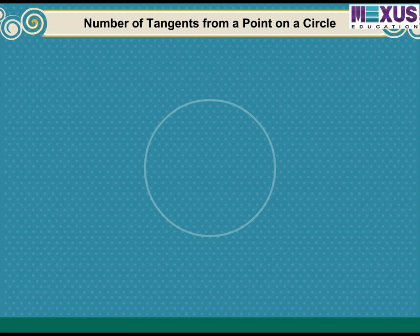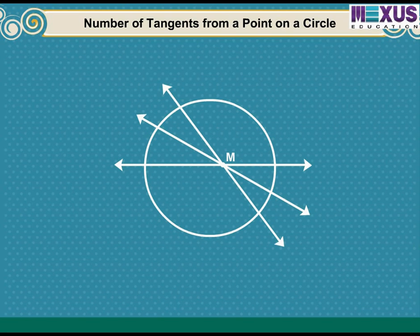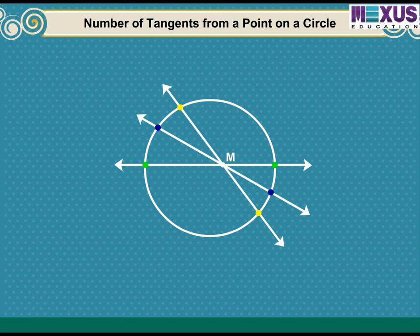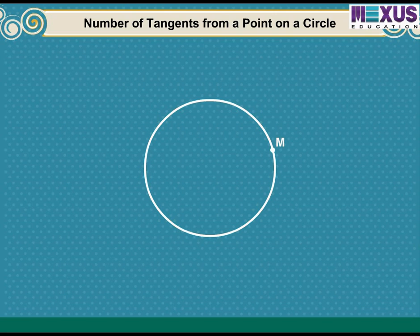Let us understand the number of tangents from a point on a circle with the help of an activity. Draw a circle and take a point M inside it. You will find that all lines through this point intersect the circle in two points, so it is not possible to draw any tangent to a circle through a point inside it. Next, take a point M on the circle — there is only one tangent to the circle at such a point.